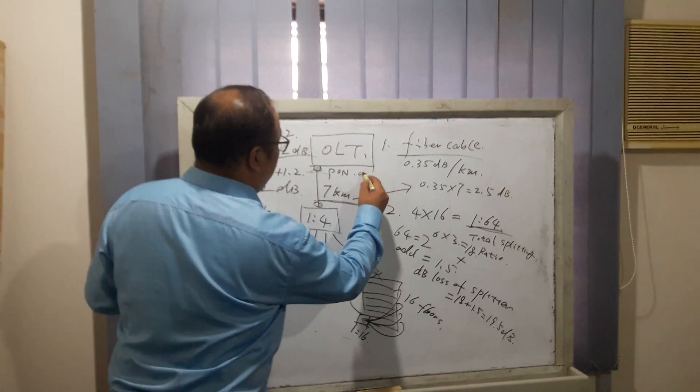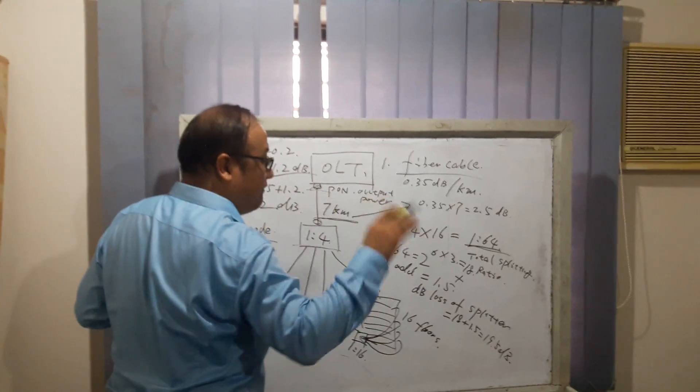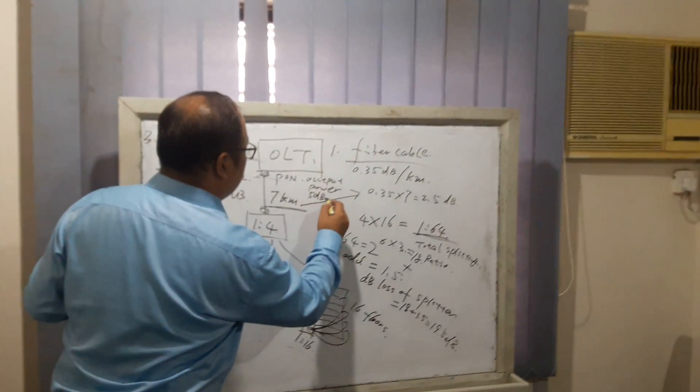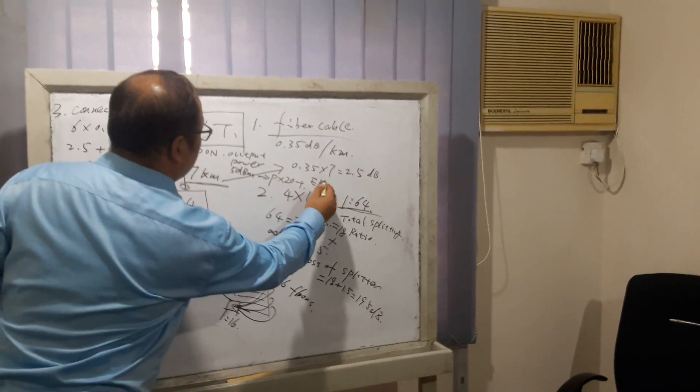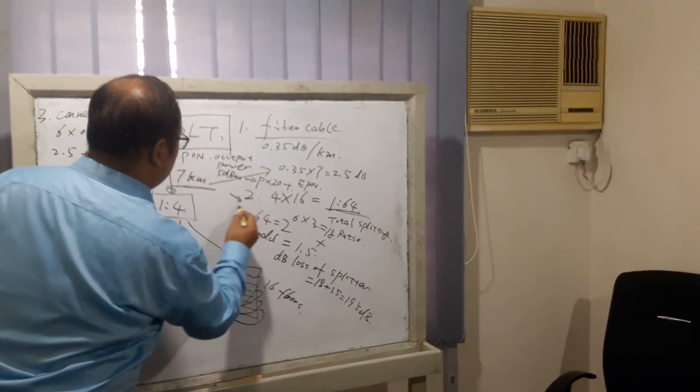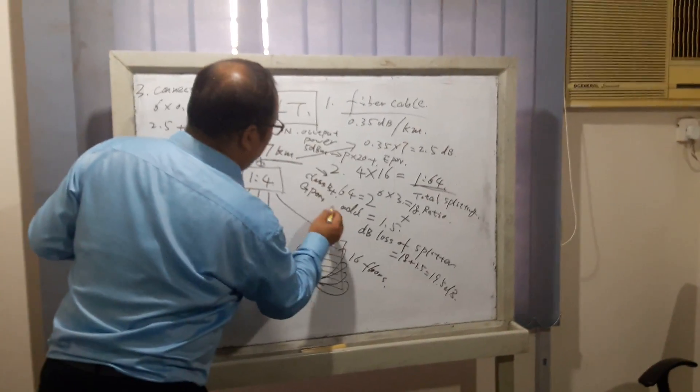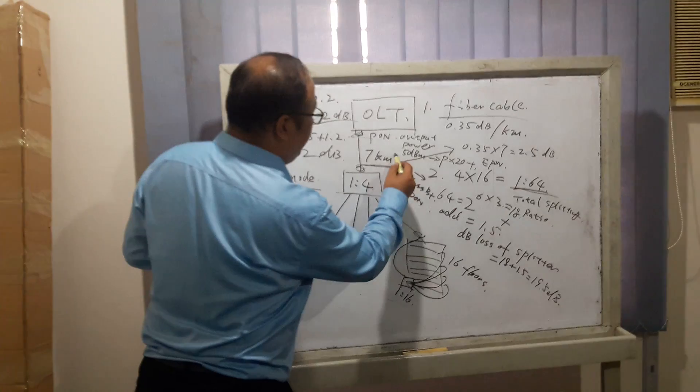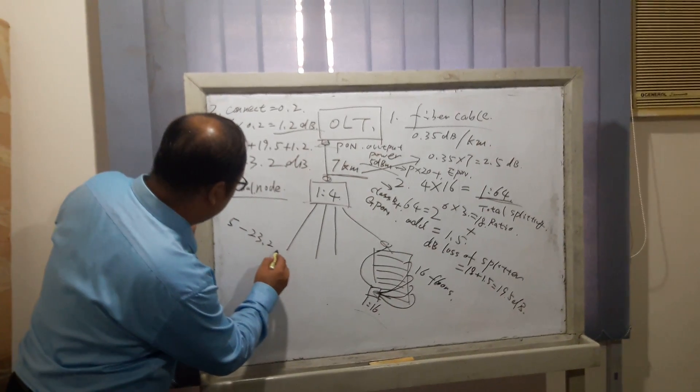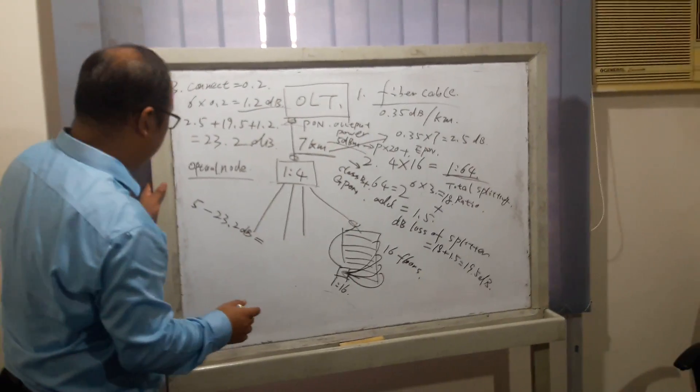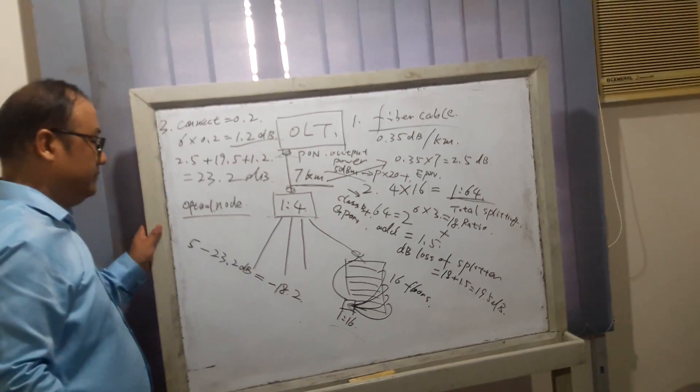As we know, the PON output power is, on average, 5 dBm for PX20+ EPON or Class B+ GPON optical modules. The output power is 5 dBm. 5 dBm minus 23.2 dB equals -18.2 dBm.